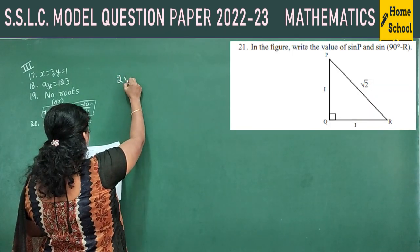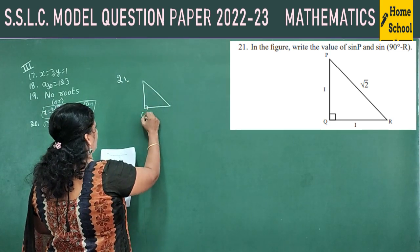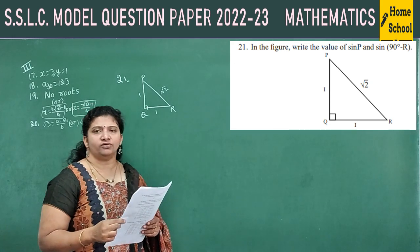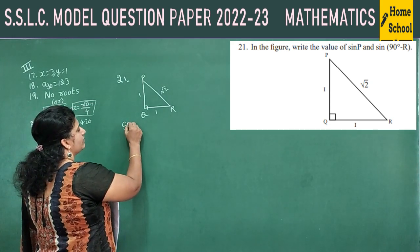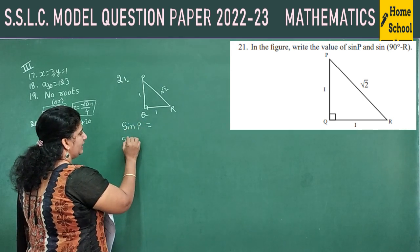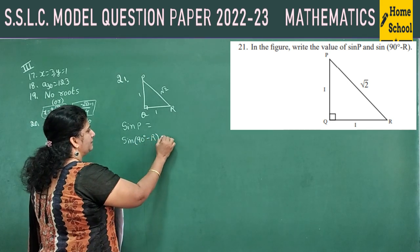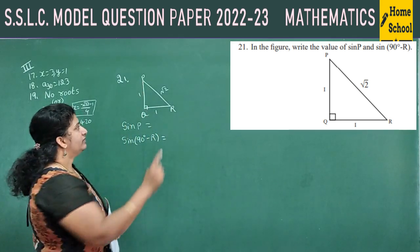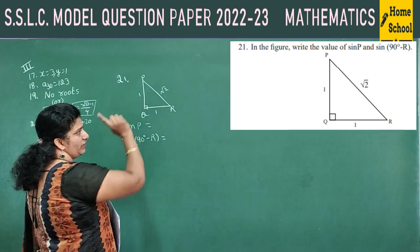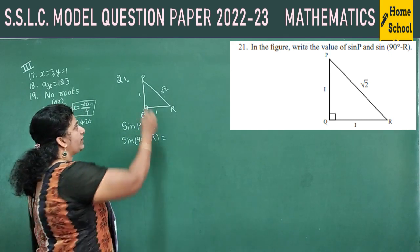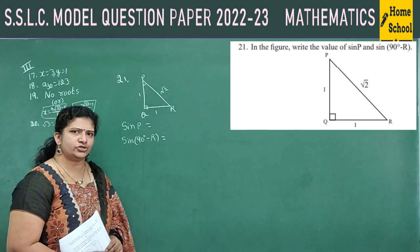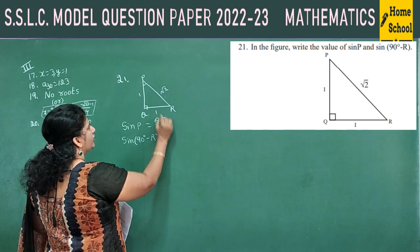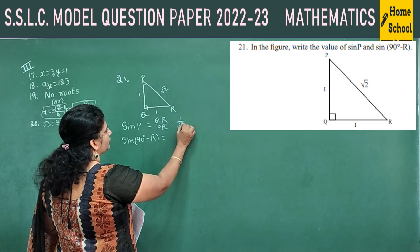Question 21: in a right triangle PQR with Q as the right angle, hypotenuse PR = √2 and the other two sides QR = 1 and PQ = 1. Find sin P and sin(90° − R). For sin P: opposite side to P is QR = 1, hypotenuse = PR = √2. So sin P = 1/√2.